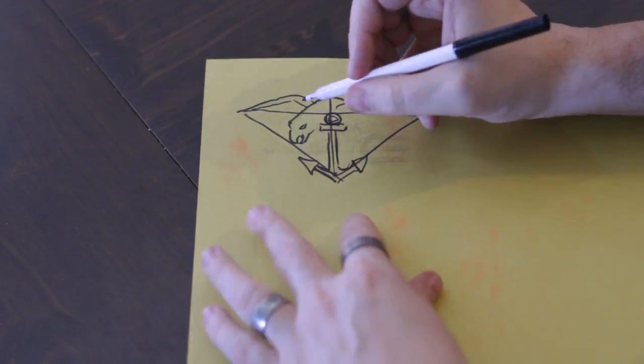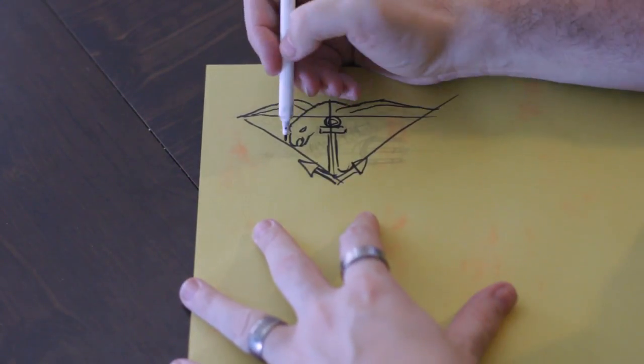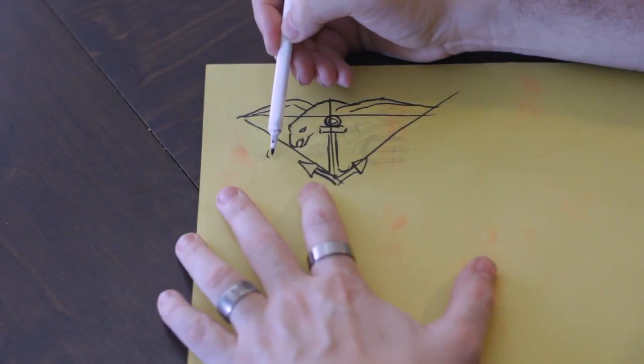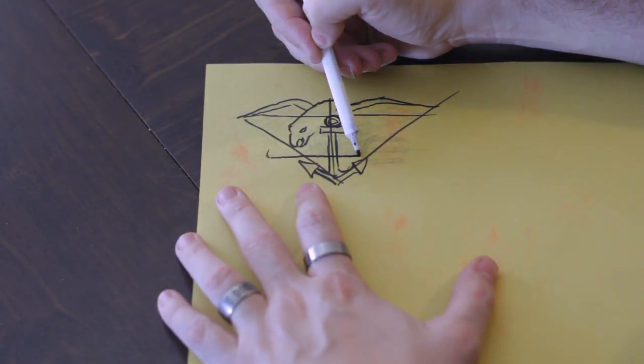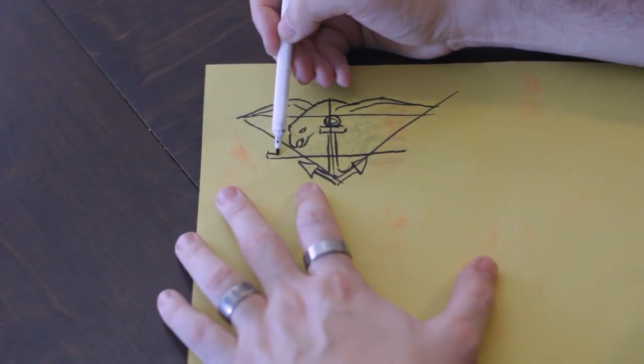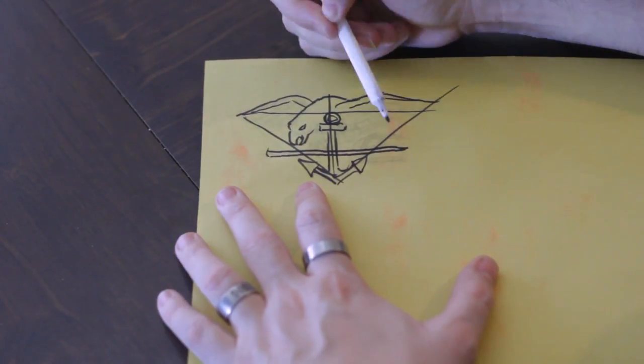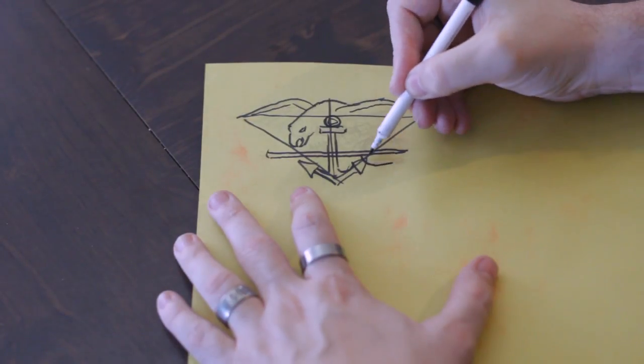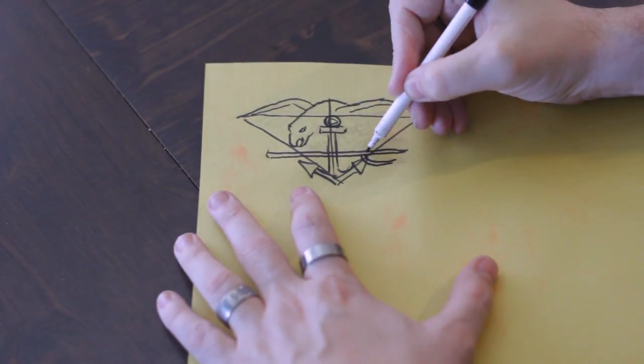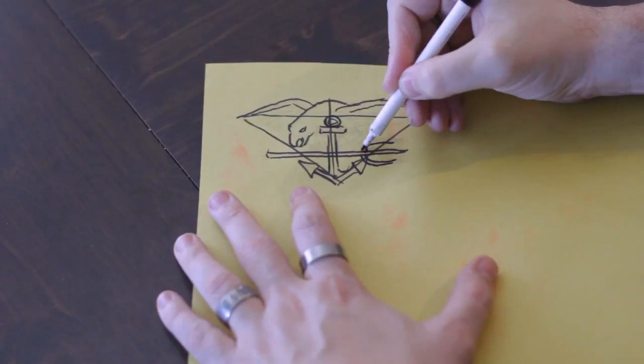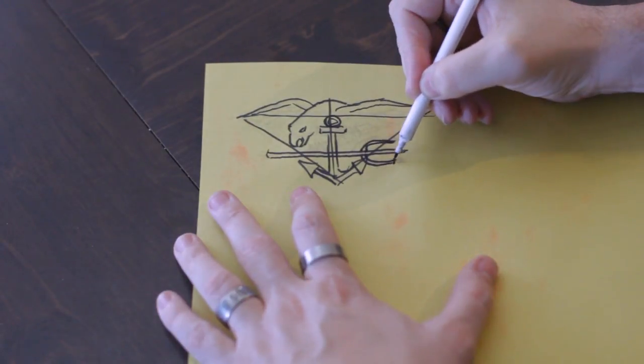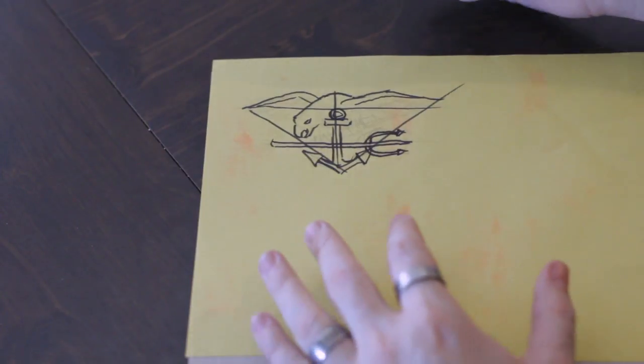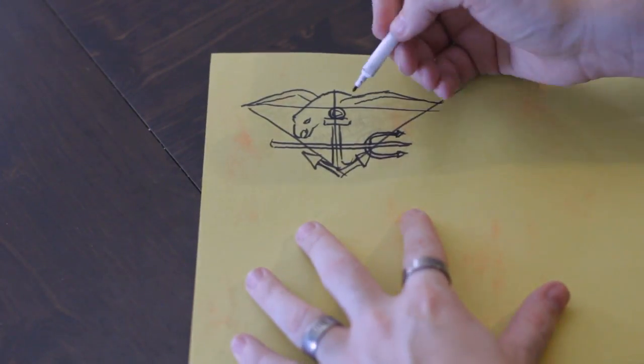And the next part we have is a trident. Now this is the weapon of Poseidon or Neptune the god of the ocean. Of course we're talking about Navy SEALs. So this symbolizes the water that they are comfortable operating in. Water is one of the most difficult areas to operate in. If you've ever been swimming you know that as you're swimming around in the water it's very difficult to move. But Navy SEALs move in the water with no problems.